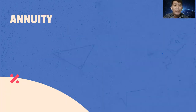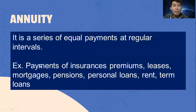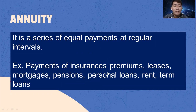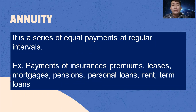What is annuity? It is a series of equal payments at regular intervals. Examples of annuity include payments of insurance premiums, leases, mortgages, pensions, personal loans, rent, and term loans.